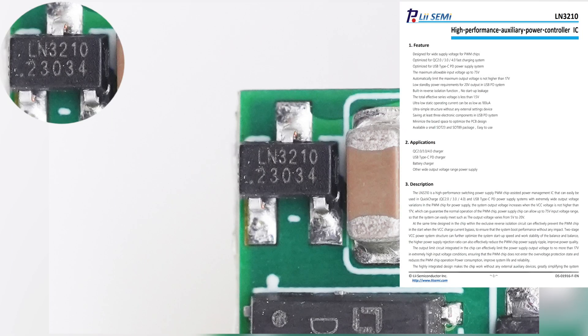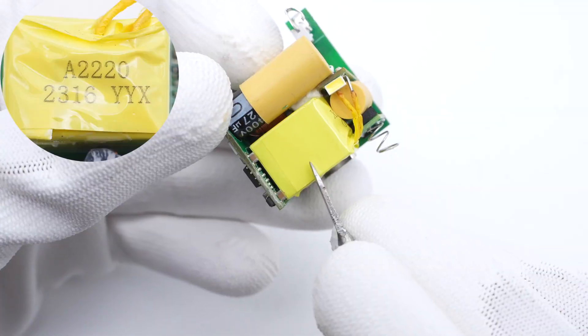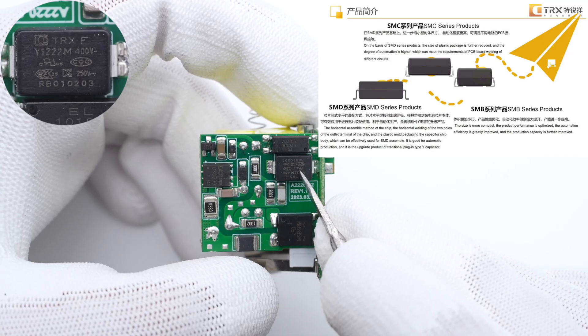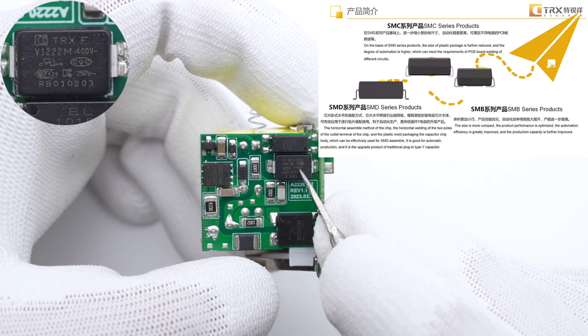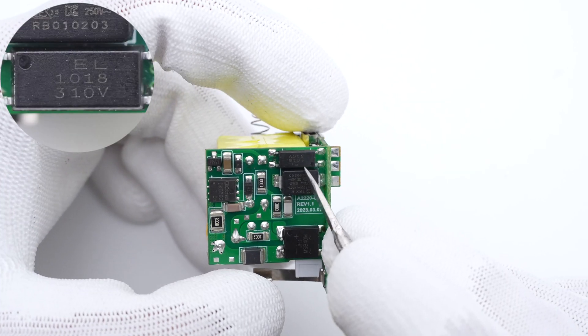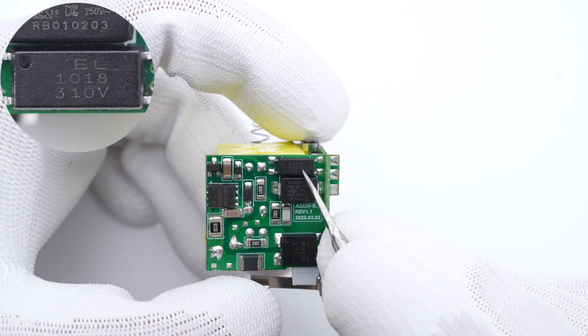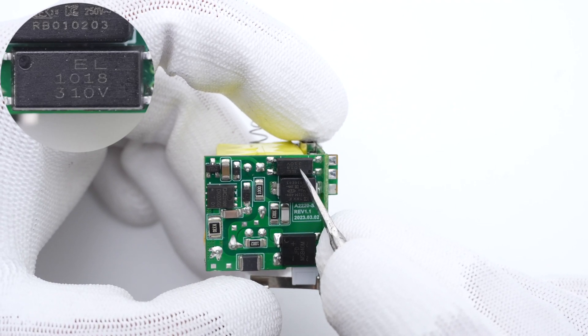The power management IC is from LiSemi, which can power the main control chip. It supports up to 75V input voltage with low standby power consumption. The big transformer is insulated with yellow tape. The SMD Y capacitor is from TRX. This EL1018 optocoupler is from Everlight and is used for providing feedback on the output voltage.